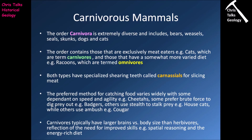The preferred method for catching food varies widely within this group — some carnivores are dependent on speed and agility, like a cheetah; some prefer brute force, like a badger; others use stealth to stalk their prey, like house cats; while others are ambush predators like cougars. Carnivores typically have quite a large brain-to-body size ratio, much greater than that of herbivores. This reflects both the need for improved skill sets such as spatial reasoning when hunting, and their more energy-rich diet — meat offers a much richer energy source, allowing them to support the high energy requirements of a large brain.